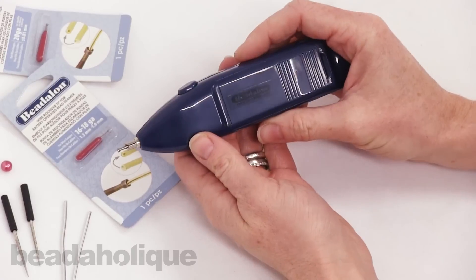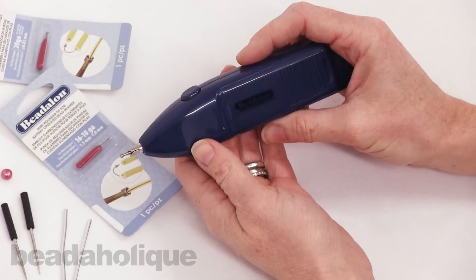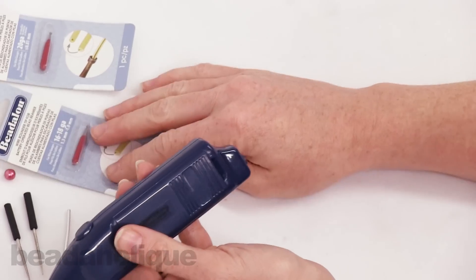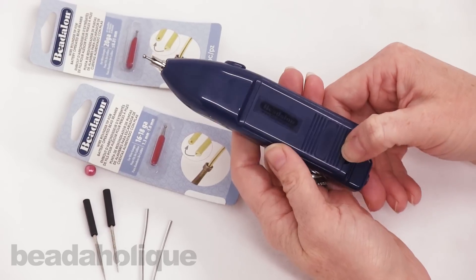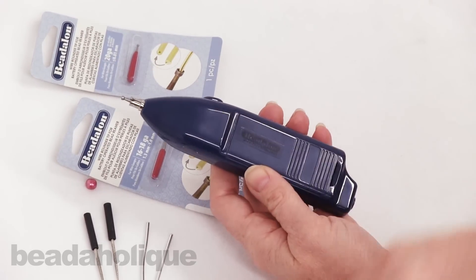So again, this is the Beadalon battery operated bead reamer which also works with these nice wire rounder tips. And then real quick before I sign off I want to show you a quick tip for opening up the battery pack.